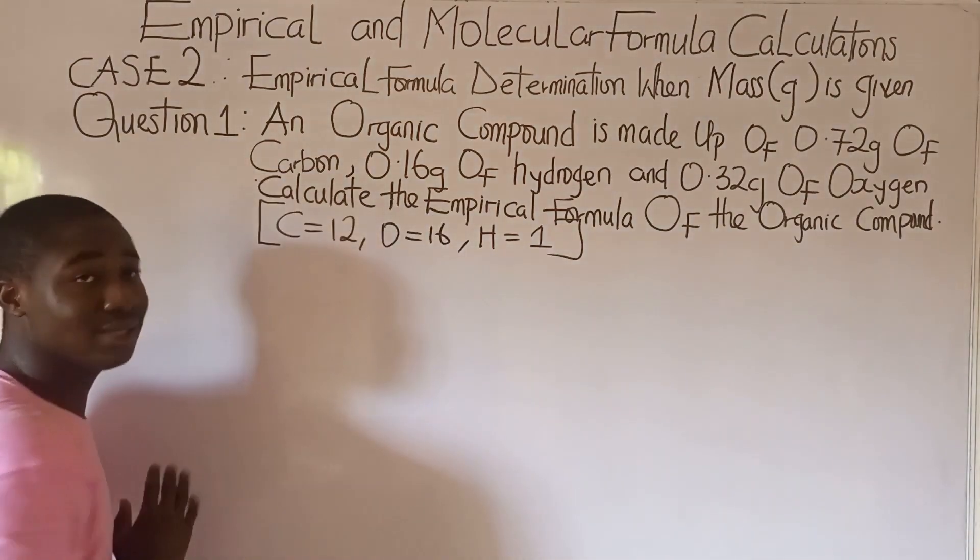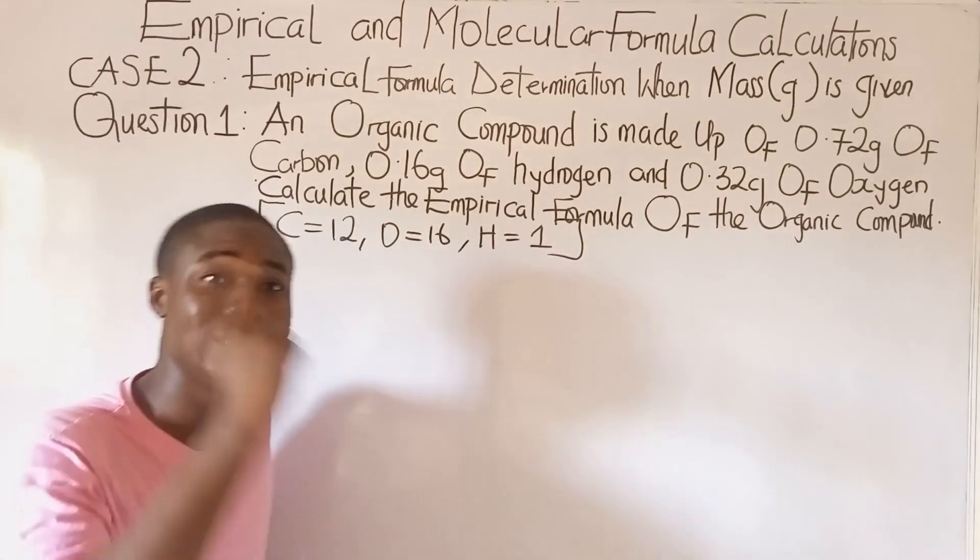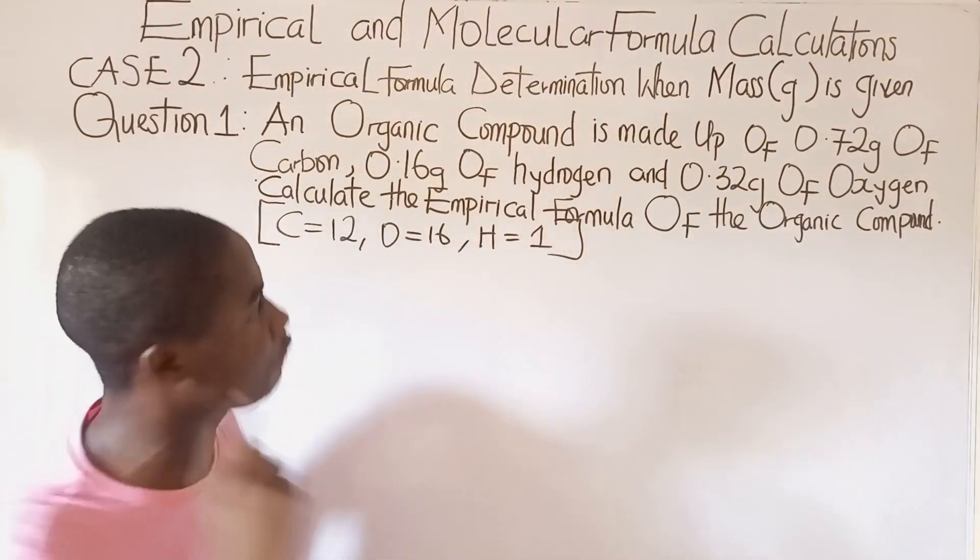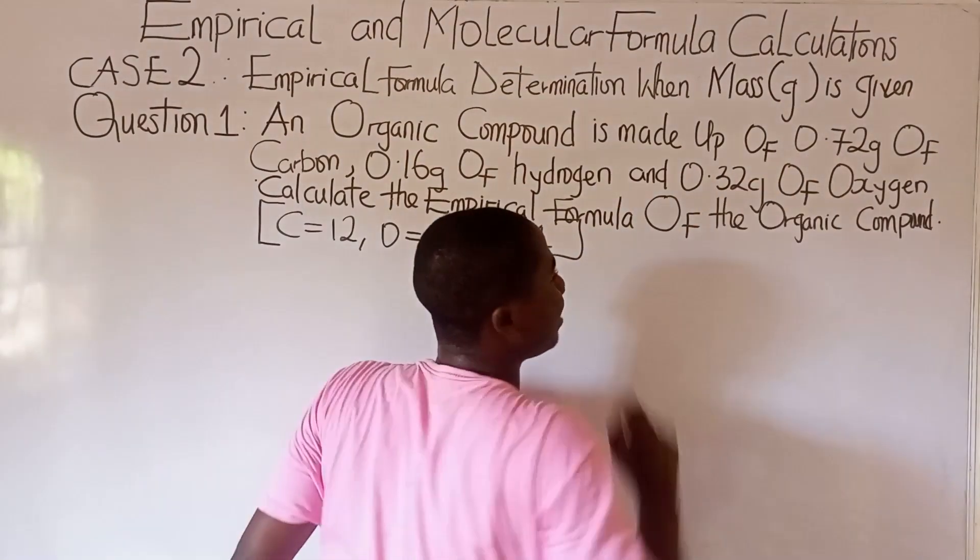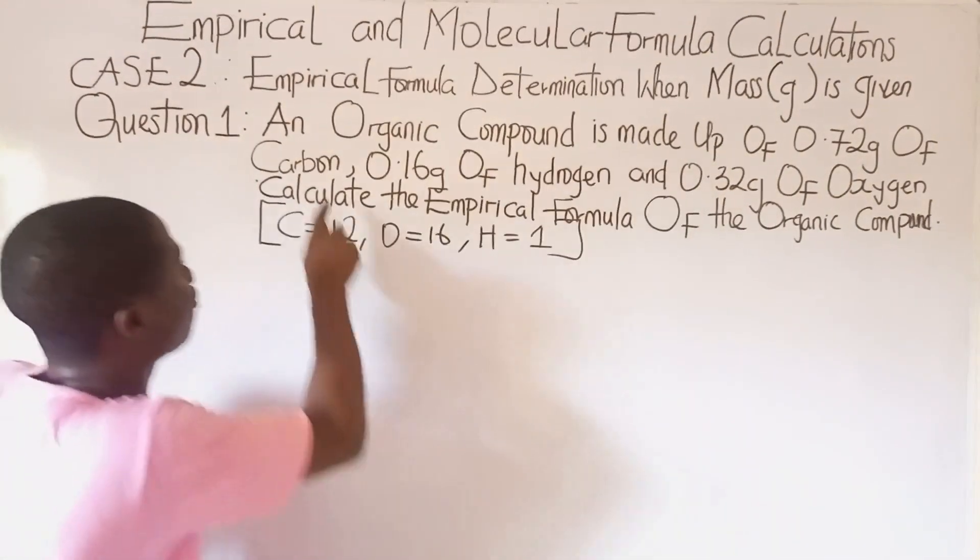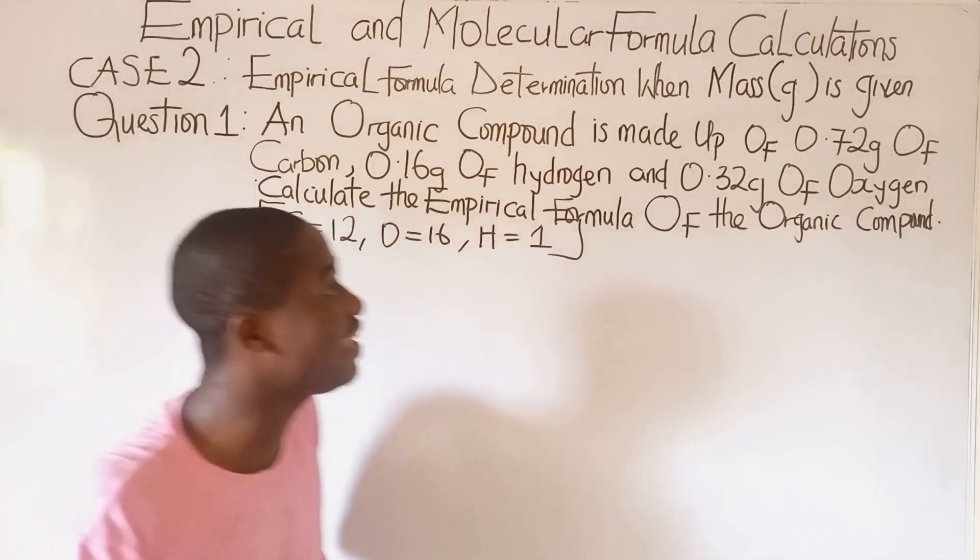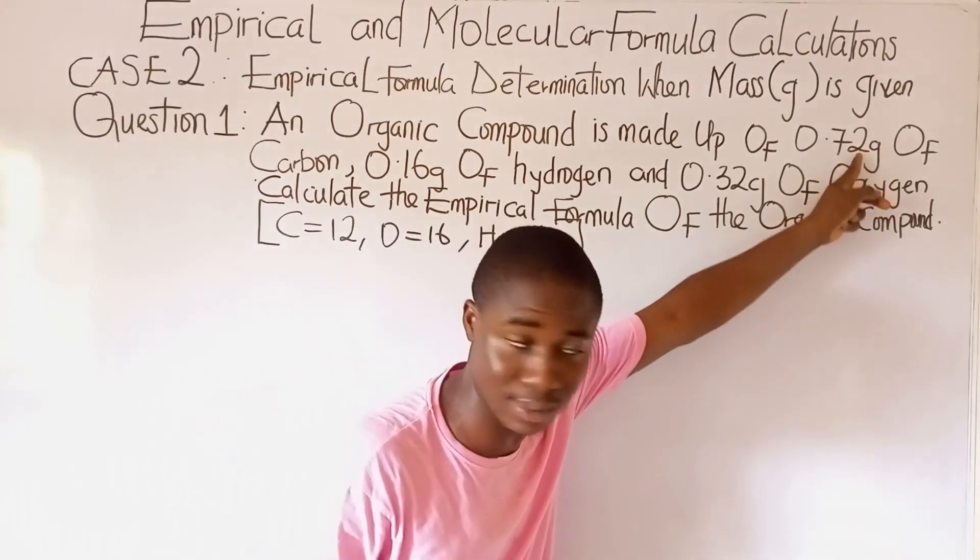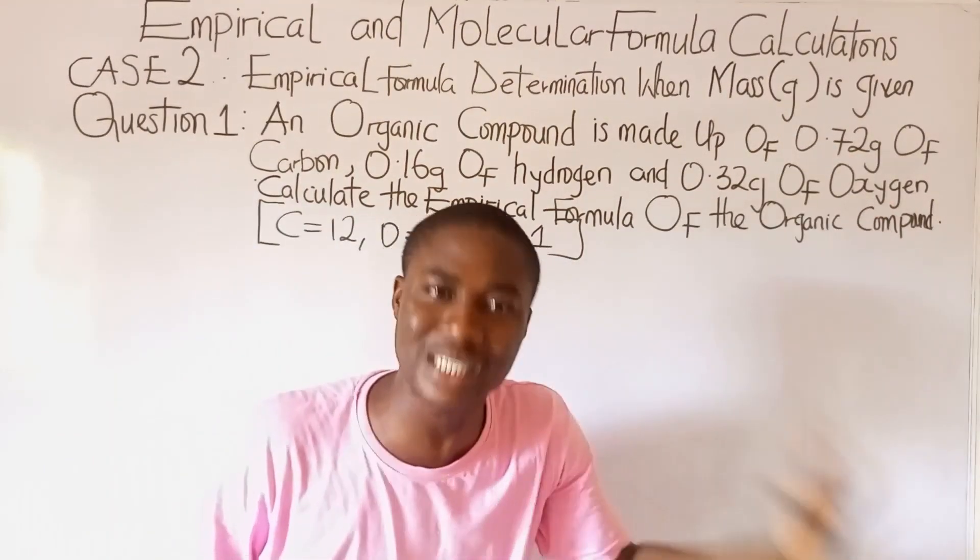The question says: an organic compound is made up of 0.72 grams of carbon. Now you are hearing something in this question. What are you hearing? Grams. And what is gram? Gram is mass.